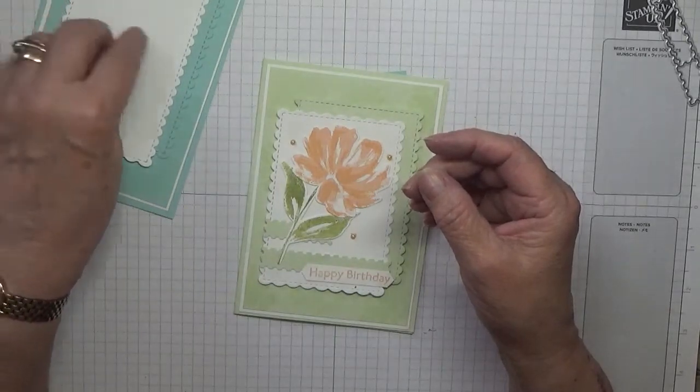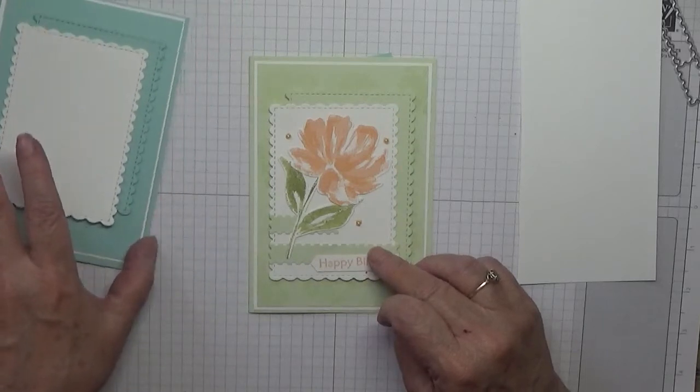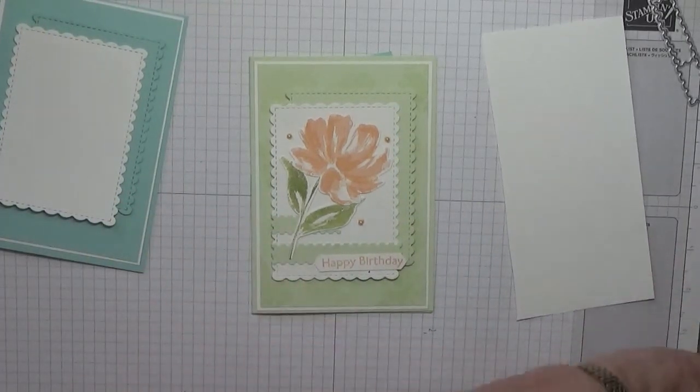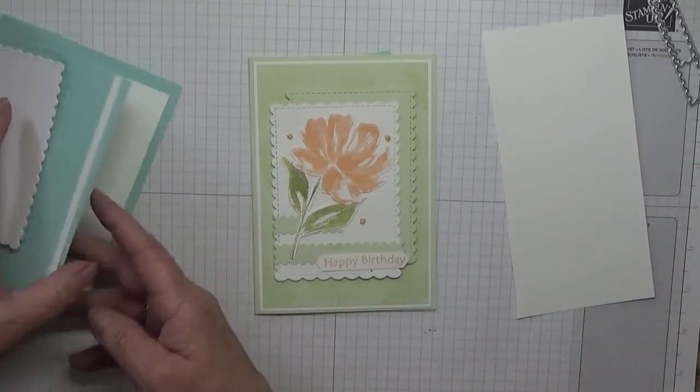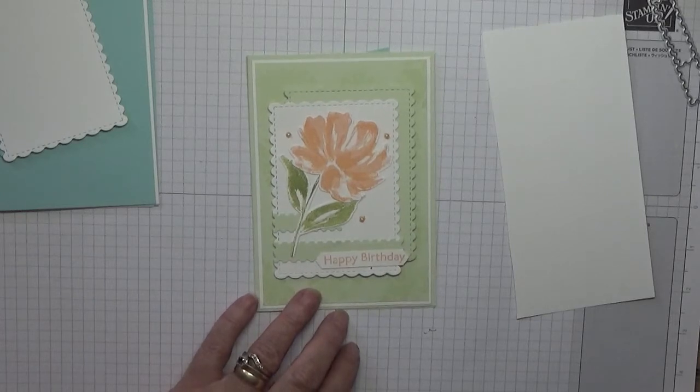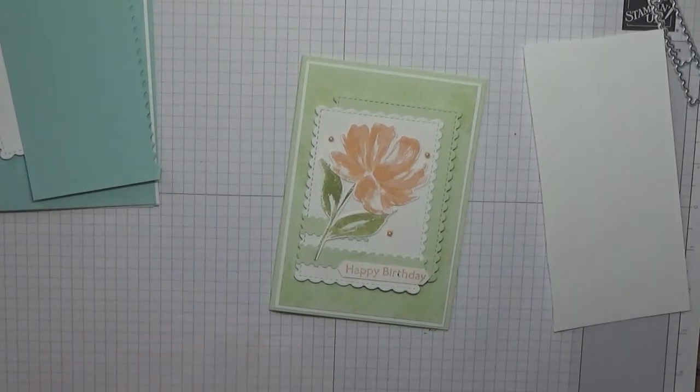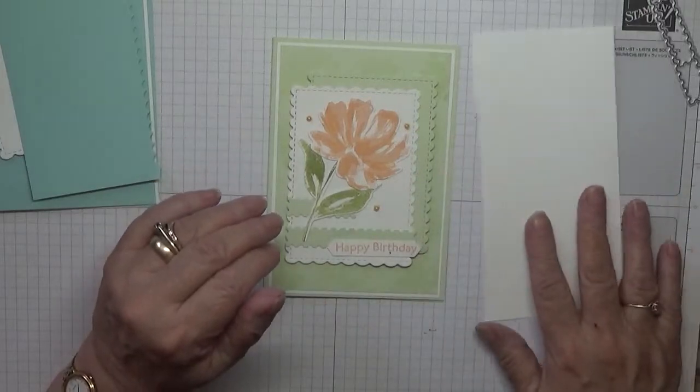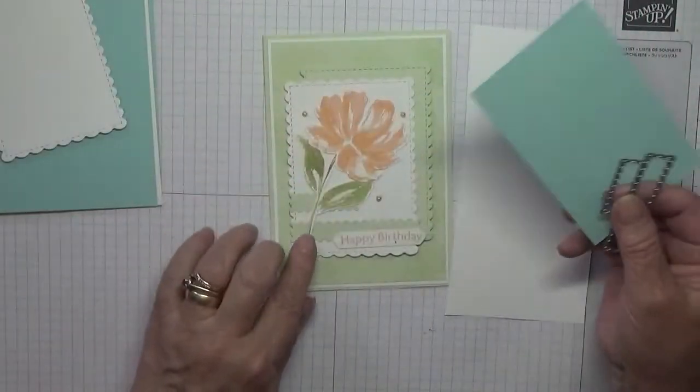I do need scraps. I've got a scrap of white for the flower and the leaf, and a scrap of Pool Party. There's a scrap of Pool Party - that's why I couldn't find it where I thought it was. So I've got white to cut the leaves and flower out, and this scrap of Pool Party to cut out one of these each, just for a bit of decoration along the bottom.